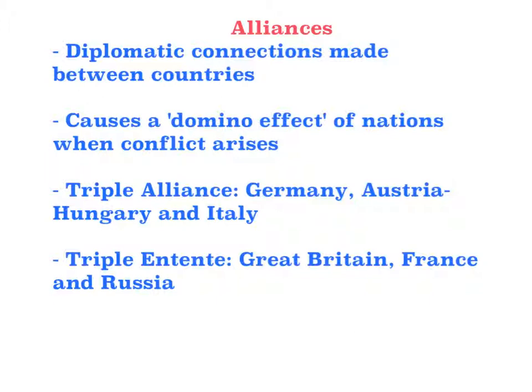Another cause for the First World War was the alliances that had been set up throughout Europe. The two major sides during this time period were the Triple Alliance, with Germany, Austria-Hungary, and Italy, and the Triple Entente, with Great Britain, France, and Russia. The alliance system had been set up to ensure that no one country had the balance of power. However, an inherent fault that lay within the system was that once two countries entered a conflict, the others would have to enter as well. Following the assassination in Sarajevo, a domino effect of nations occurred as more and more countries entered the war, proving that the alliance system only further fuelled the tensions and divides within the continent.